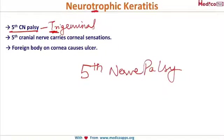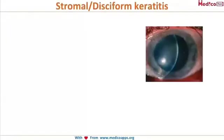We know that the fifth cranial nerve carries sensations to the cornea, and this is lost in neurotrophic keratitis. The patient cannot feel anything — even if there is a foreign body on the cornea, they do not realize it is there. It remains impinged for a very long duration, ultimately resulting in a corneal ulcer. That covers neuroparalytic and neurotrophic keratitis.